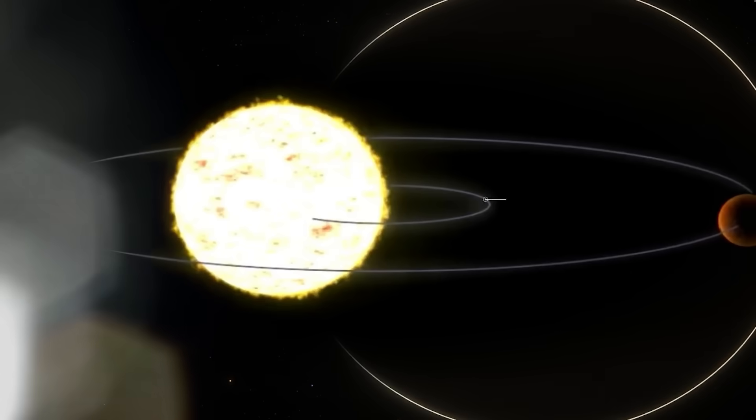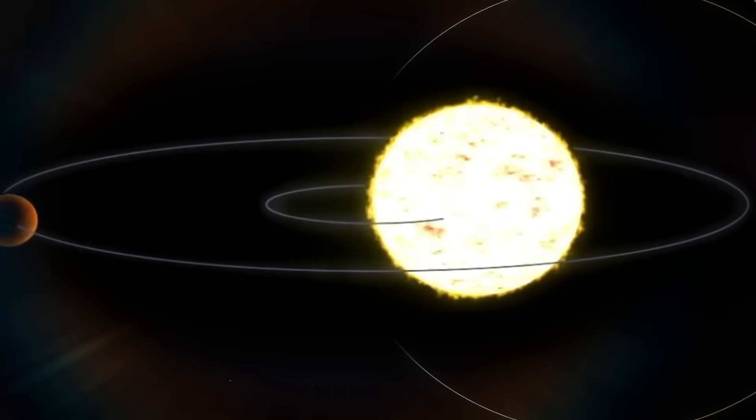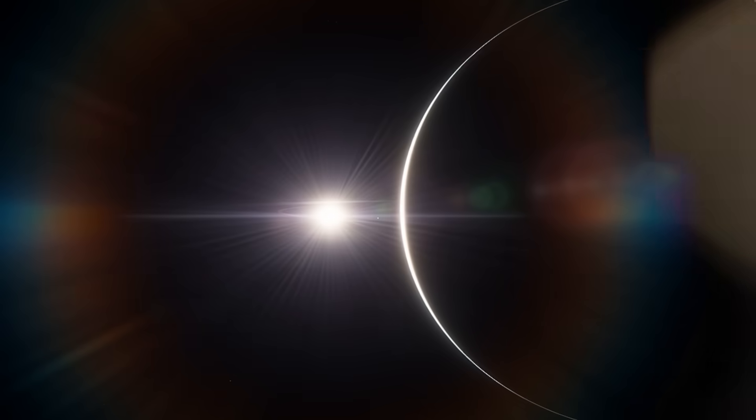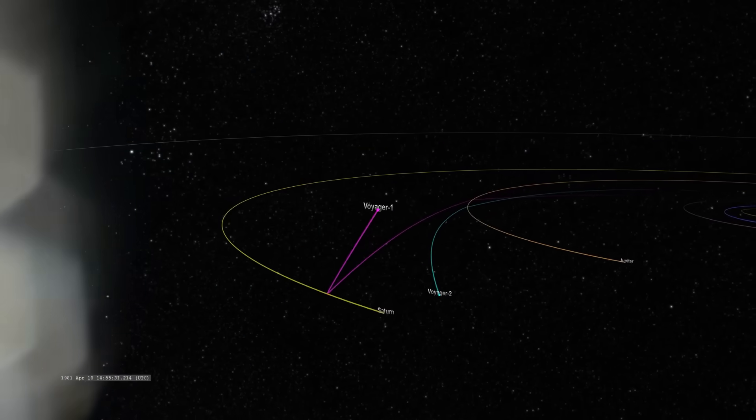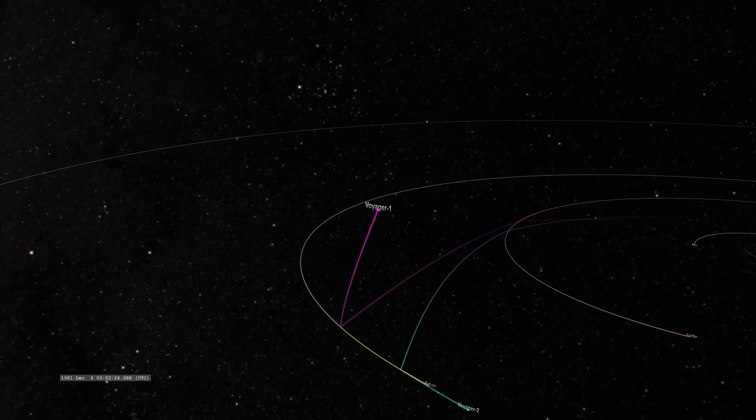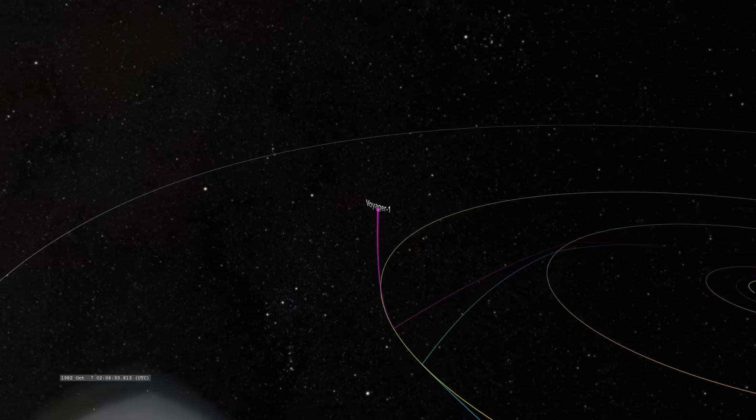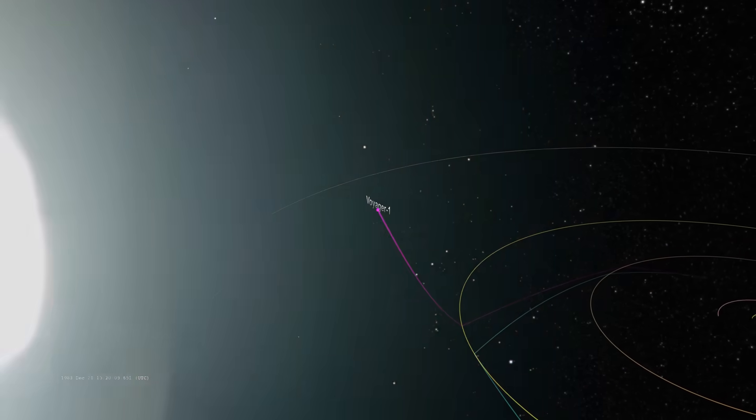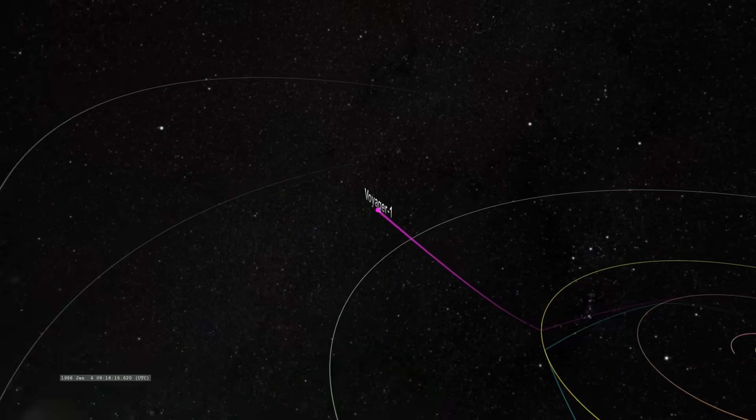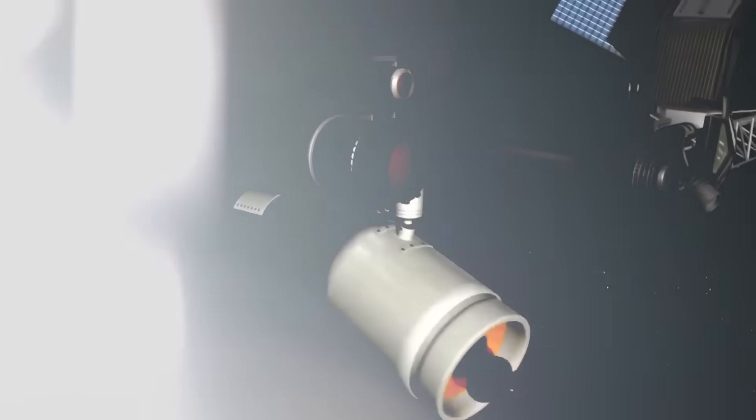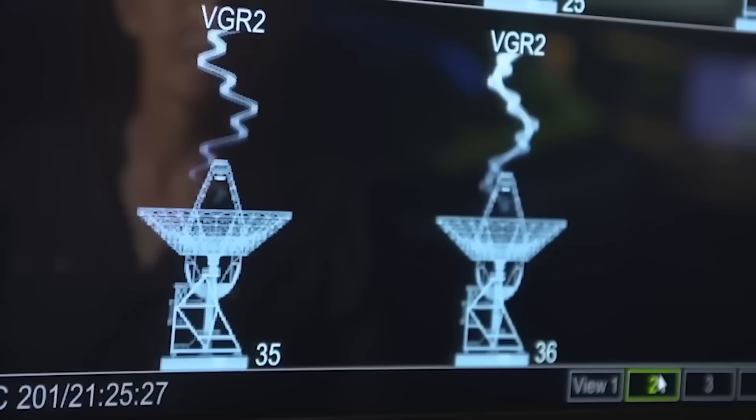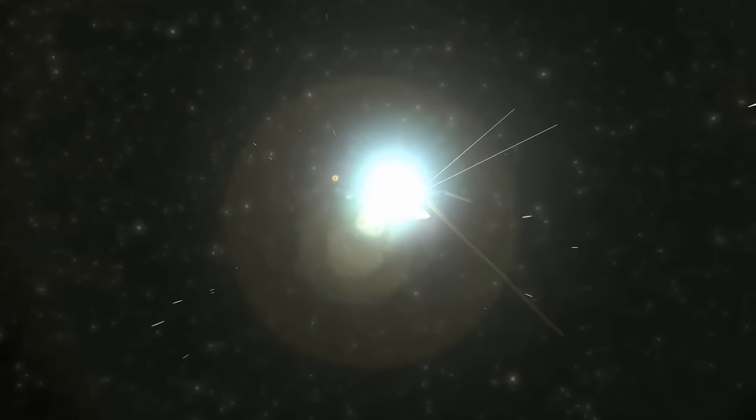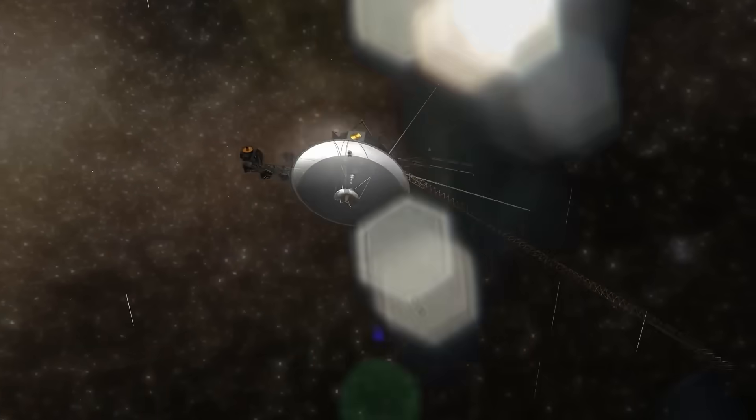Voyager 1 was never supposed to survive this long. It was designed for a planetary tour. Not an interstellar pilgrimage. It was never supposed to send back data beyond the edge of the solar wind. And it was certainly never built to receive anything. It was meant to speak. To declare our presence to the stars with a golden record of whale songs, human laughter, and distant greetings. But now, decades after we last touched its frame, after it slipped into the void and disappeared into silence, it has done something no one predicted. It turned. Not in failure, but in purpose.